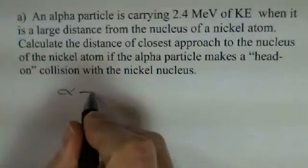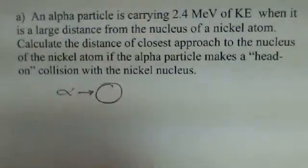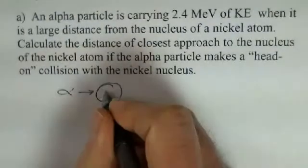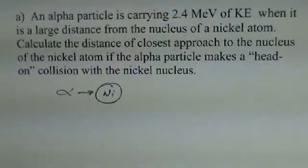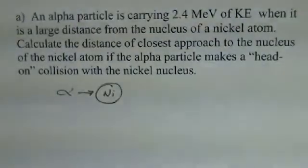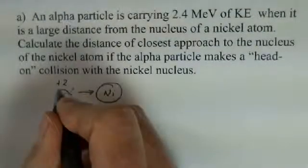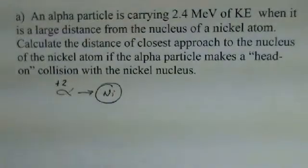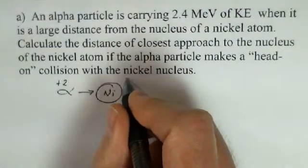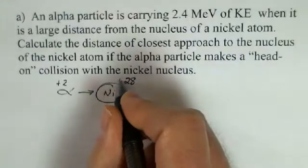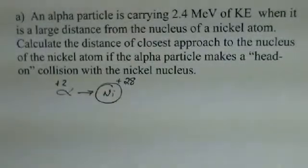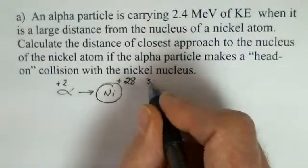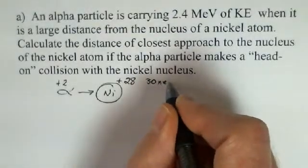Here's our alpha particle coming into the nickel nucleus. What kind of concept might we employ? We're told that we have some kinetic energy to start with. The alpha particle carries a charge of plus 2. You'd have to look up that the nickel nucleus has 28 protons, so it's a charge of plus 28 units, and then there are 30 neutrons for one isotope of nickel.